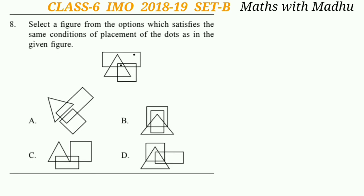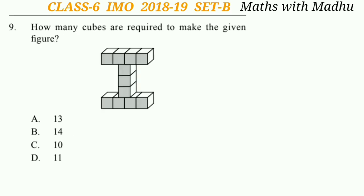Now question 8. Select a figure from the options which satisfies the same conditions of placement of the dots as in the given figure. Look at the figure — the upper dot is within the rectangle only, and the lower dot is within both the triangle and the square. We have to find the figure in which we can place the dots in the same way. The correct answer will be option D.